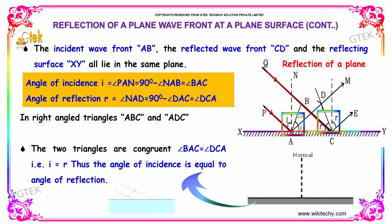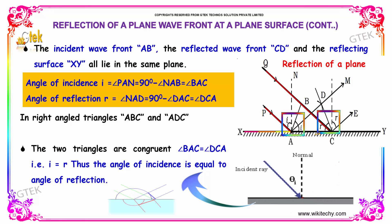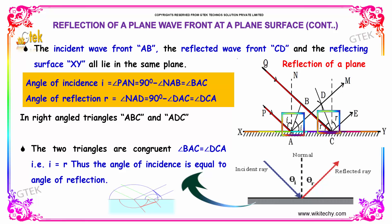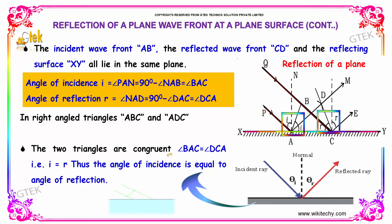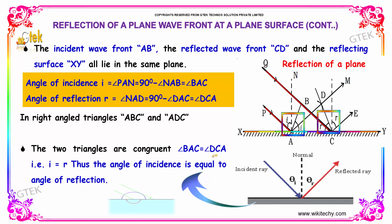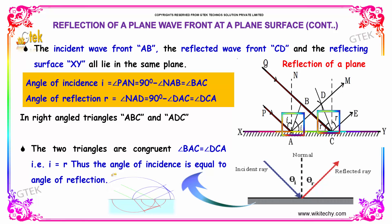Based on right angle and congruent triangle properties, since angle BAC equals angle DCA, we can show that the two triangles are congruent. Therefore, angle BAC equals angle DCA, which indicates that I is equal to R — that is, the angle of incidence equals the angle of reflection.